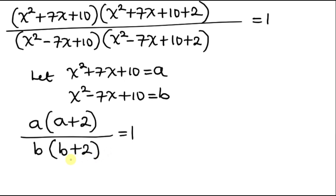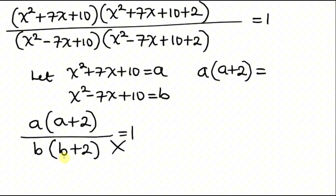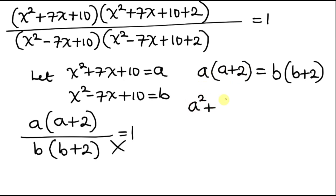Our next step is to cross-multiply. So a(a + 2) = b(b + 2). Opening the brackets: a² + 2a = b² + 2b.